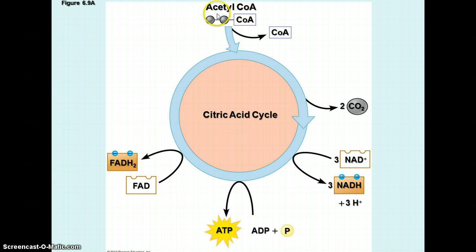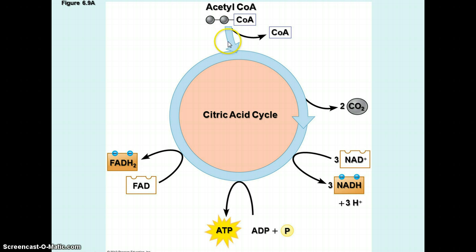You have acetyl-CoA, which is formed from the two-carbon parts of the pyruvate after one carbon dioxide has been stripped off. This joins with coenzyme A to make acetyl-CoA, which goes through a series of changes in the citric acid cycle.